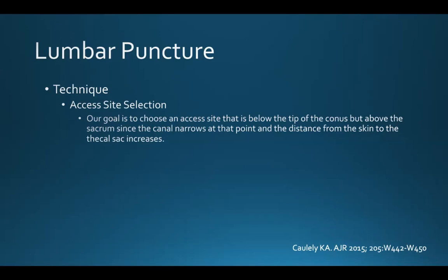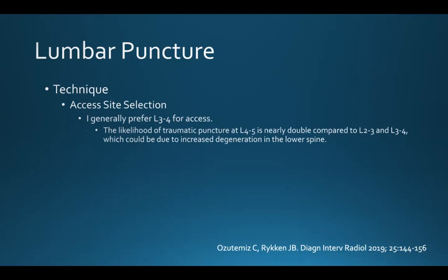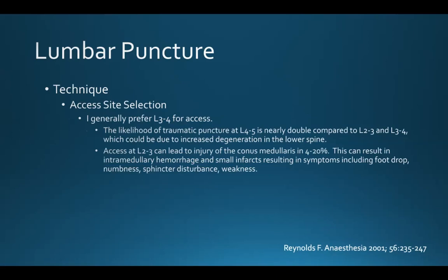Our goal when selecting the puncture site is to choose an access site below the tip of the conus but above the sacrum, since the canal narrows there and the distance from the skin to the thecal sac increases. I generally prefer L3-4 for access. The likelihood of a traumatic puncture at L4-5 is nearly double compared to L2-3 and L3-4, possibly due to increased degeneration in the lower spine. Access at L2-3 can lead to injury of the conus medullaris in up to 20% of patients, causing intramedullary hemorrhage and small infarcts with symptoms including foot drop, numbness, sphincter disturbance, and weakness.